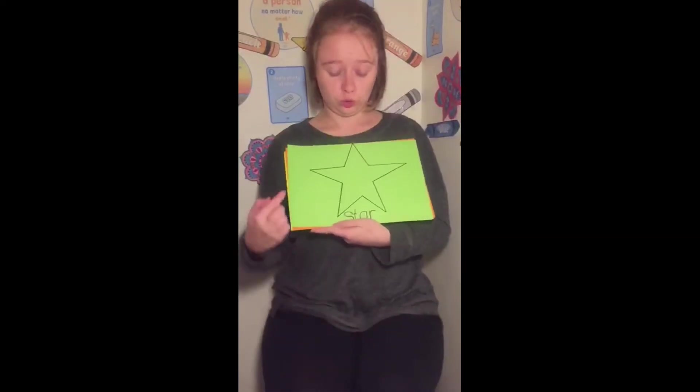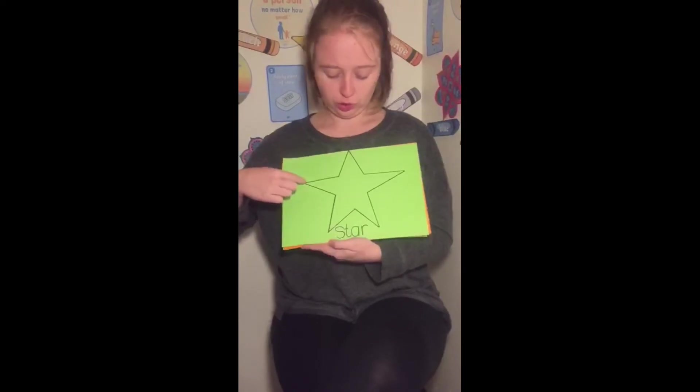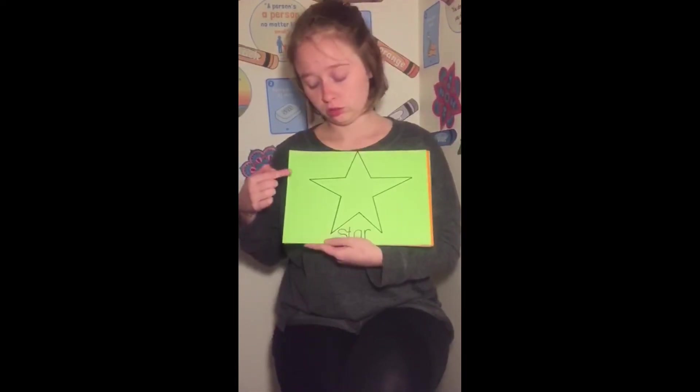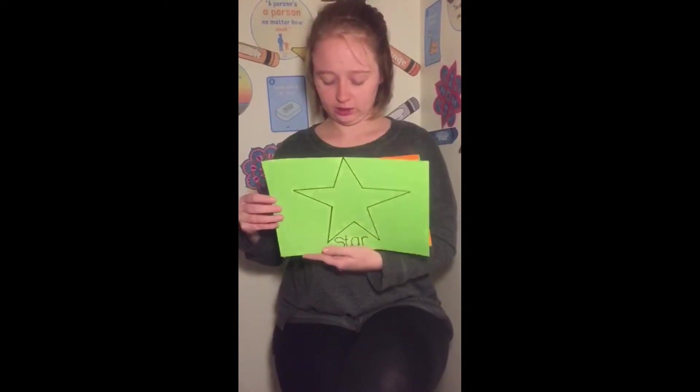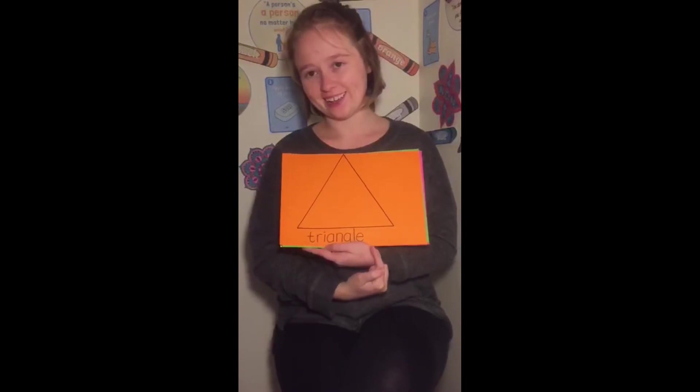The shape that everyone struggles to draw — even Teacher Bernadette can't draw a perfect star. But this is our star; it has one, two, three, four, five arms. And what colour paper is our star drawn on? Green, very good. If it has one, two, three corners, it is a triangle, that is right. And what colour paper is our triangle drawn on? Orange, very, very good.